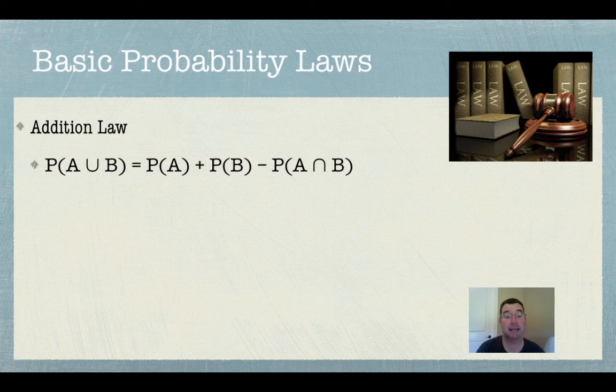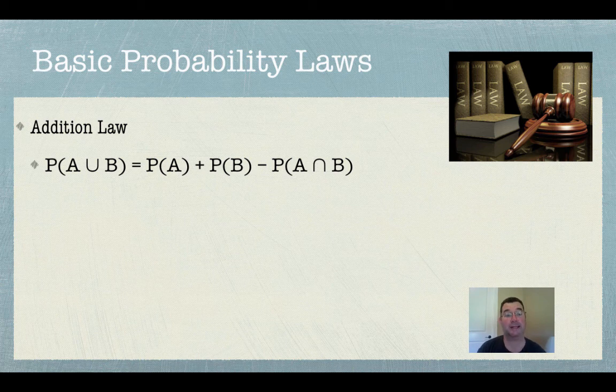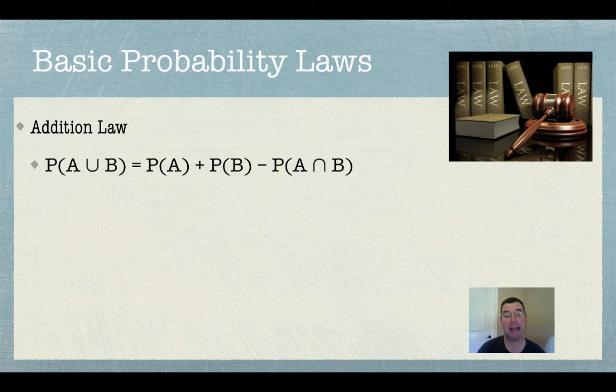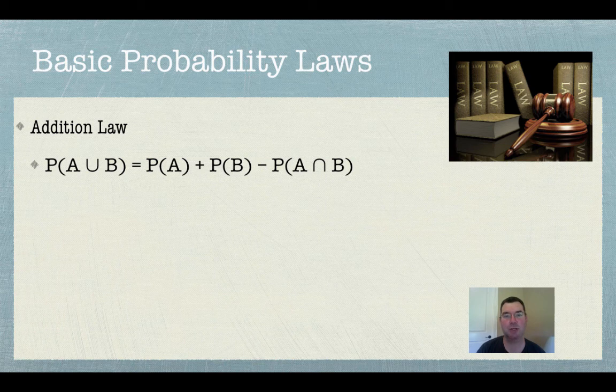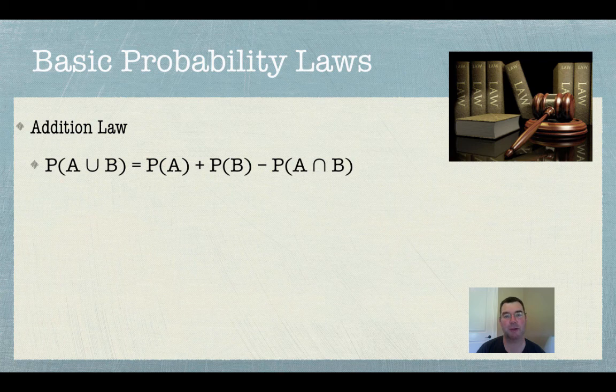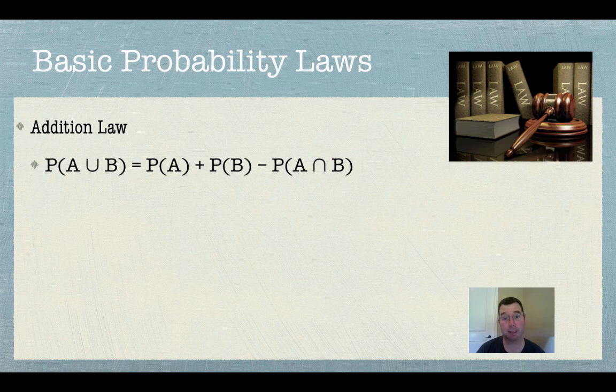The addition law says that if I wanted to know the probability that A happens or B happens, then I'll take the probability that A happens, add the probability that B happens, and subtract the probability that they both happen. Now the reason that I subtract the probability that they both happen is because I counted those twice. I counted them as part of the probability of A, and I counted them as part of the probability of B. So I counted them twice, and I really only need to count them once. So that's why I subtract them off once, so I'm only counting them once.